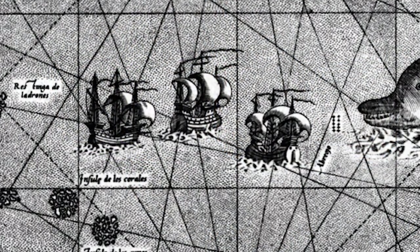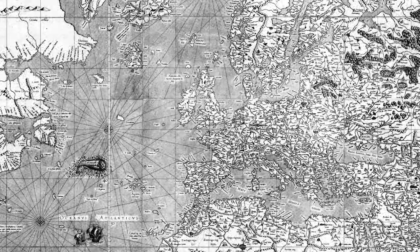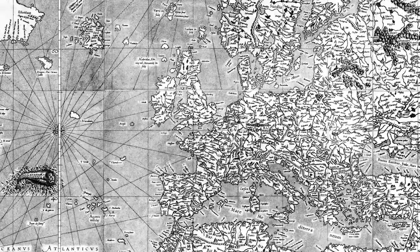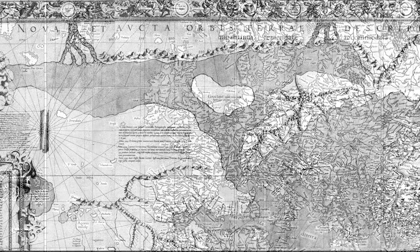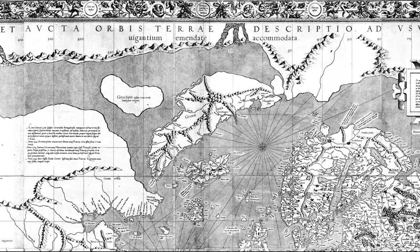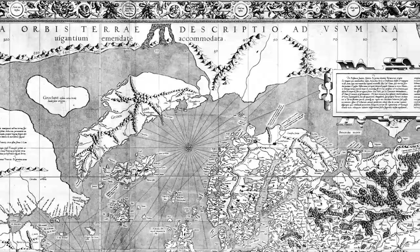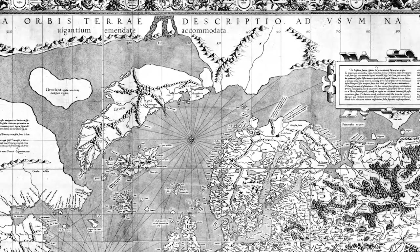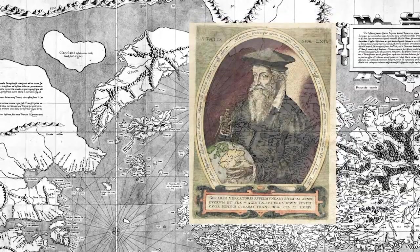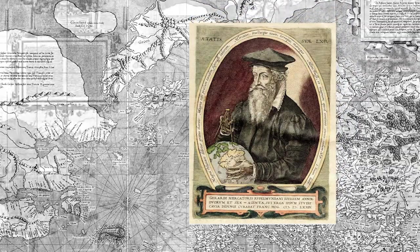Our story begins during the Age of Exploration. In 1569, a Flemish mapmaker published a world map with the title, A New and Improved Description of the Earth, Adapted for Use by Sailors. His map was a technological innovation of the first order and made him famous under his Latinized name, Mercator.